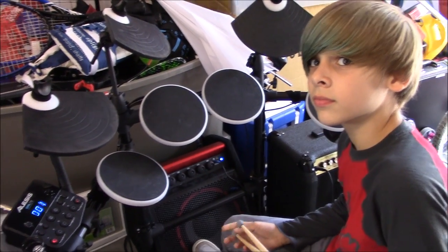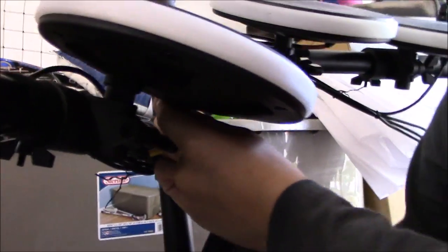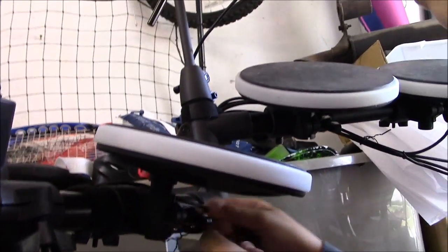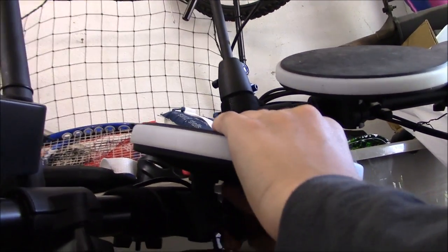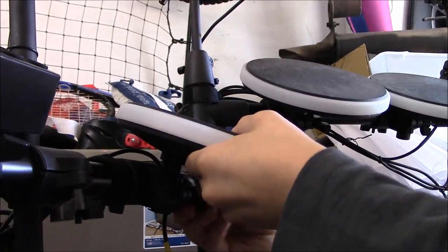First you gotta unplug the cable. There's a little clip that keeps the cable from falling out, so you want to just unplug it. Pry that open, unplug it, and then you twist it off. Yeah, the regular stereo plug, just twist it off until it's loose enough for you to do that.